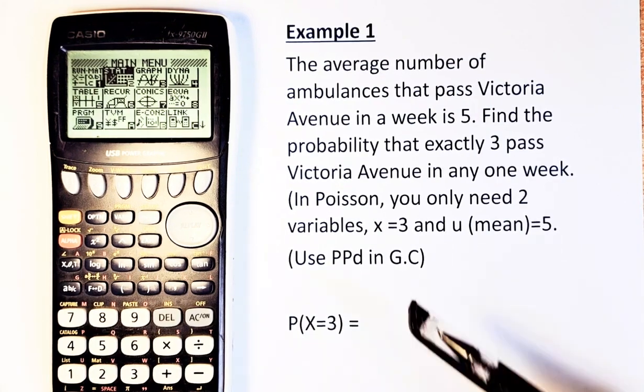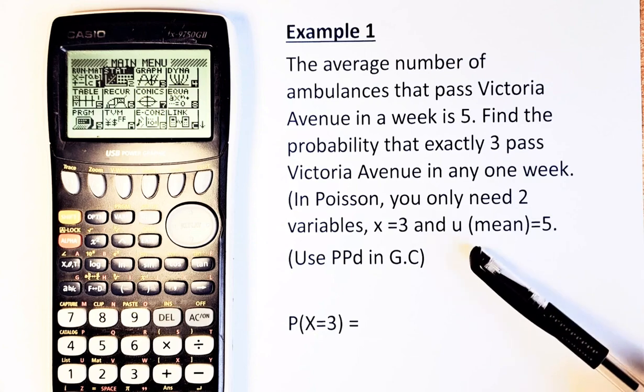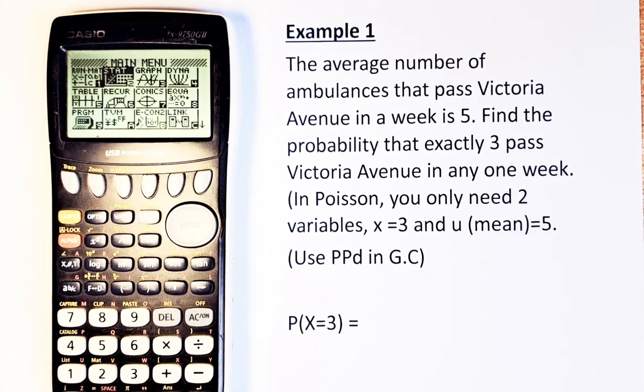In Poisson, you only need 2 variables: x = 3, and μ or lambda = 5. To do this, because they are asking for a specific number, exactly 3 passes, you have to use PPD. If it's a cumulative, then you do PCD. We'll do another example on PCD later on.